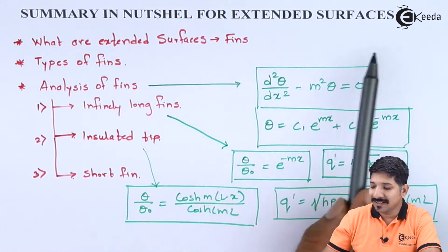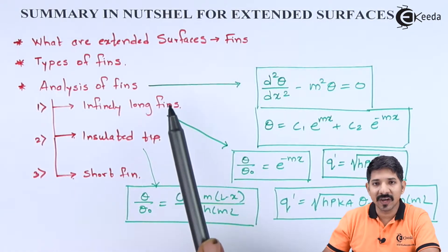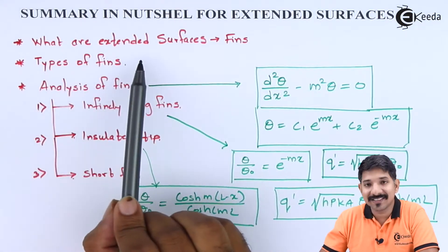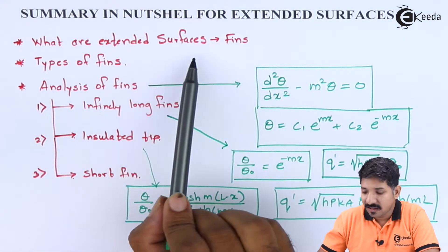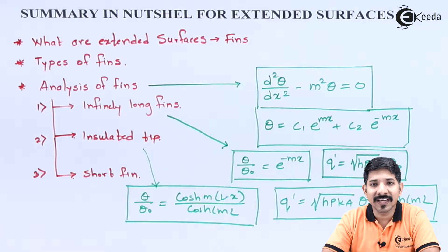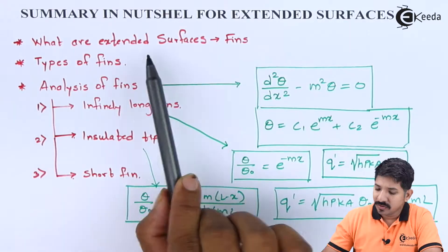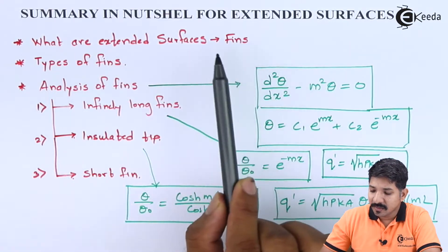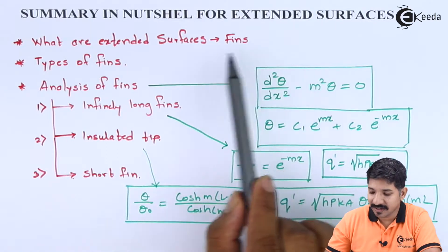These are the topics that we have covered for this chapter. We have covered what extended surfaces or fins are. If we increase the surface area of a given material, the value of H increases and in turn the heat transfer rate itself increases. So basically the use of extended surfaces will most probably increase the heat transfer rate.